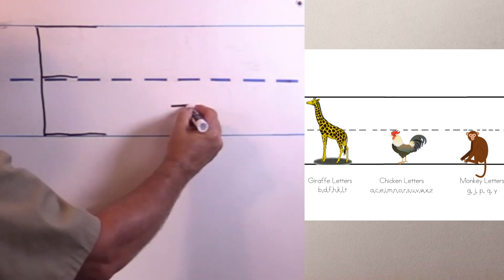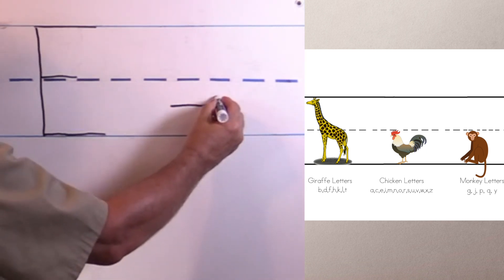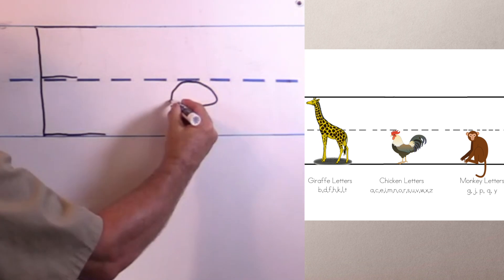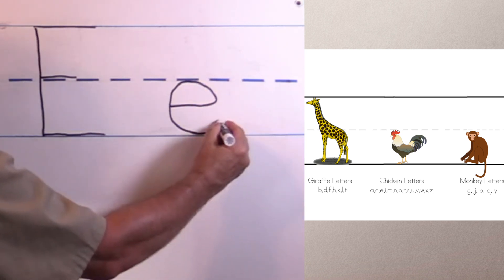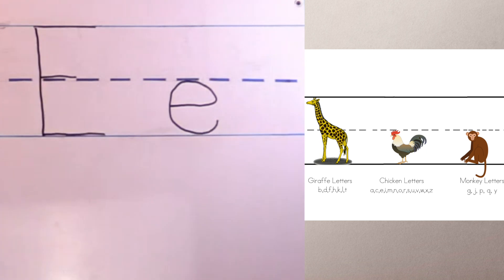And then I go over, then up and around and back down and touch that line and then curl it in. And there is our lowercase E.